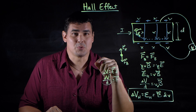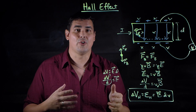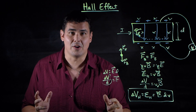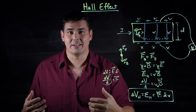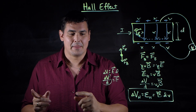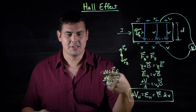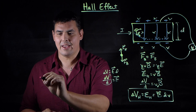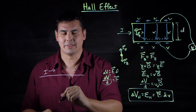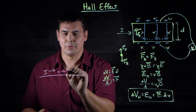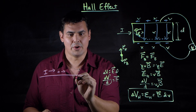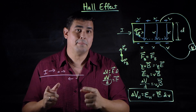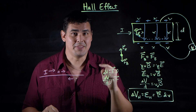The cool thing is this shows us what the charge of the charge carrier inside a current is. Remember back in the 1700s when Ben Franklin was figuring this out — he called the charge carriers positive. In reality, now we know it's negative. A negative charge flowing one way is the same thing as conventional current, which is positive flowing the other way. The Hall effect shows us that it has to be the negative charges.